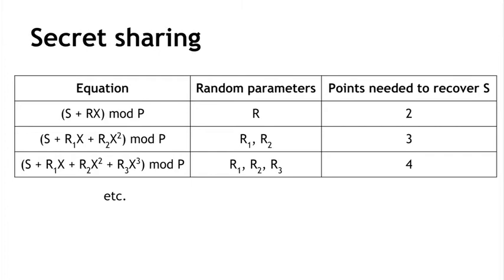If you use a quadratic, that is s plus some random value r1 times x plus some other random value r2 times x squared, then there are two random parameters r1 and r2. And with any three points, you can uniquely interpolate a quadratic and get back s. We can just go up the ladder here. If we use a cubic function, there are three random parameters. We need four points. In any case, you can generate as many points as you want on the line or the quadratic or the cubic. Therefore, you can get any value of n. And you see how you can get any value of k by just going to higher and higher order polynomials.